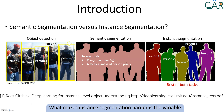Before we dive deeper into the contributions of the paper, it is important to understand what segmentation is and how it differs from object detection. The idea of segmentation is similar to object detection in that we want to classify different objects in an image. The difference is that segmentation operates at the pixel level — we want to know for every pixel whether it's an object or not, and also what type of object it is.